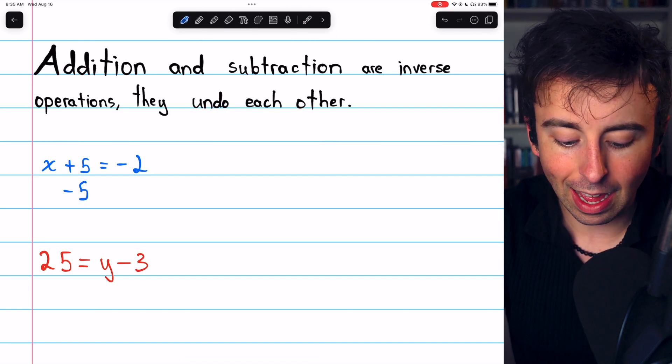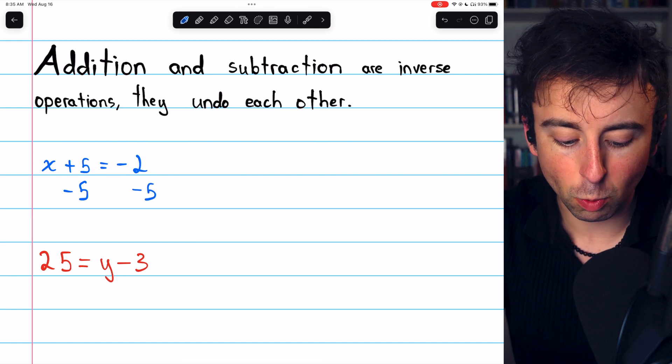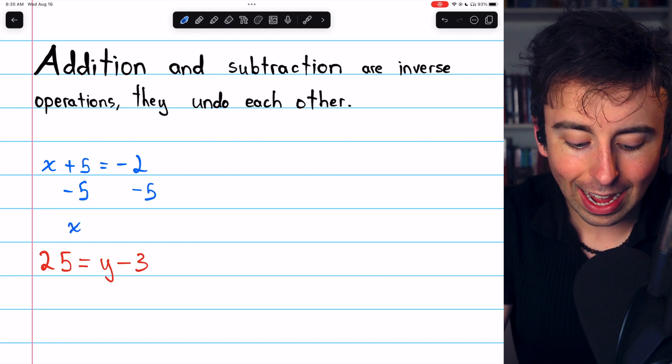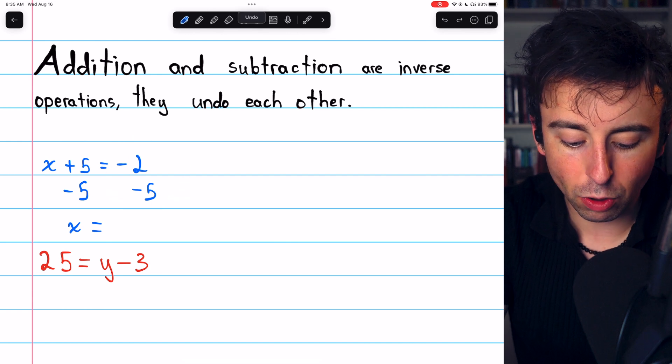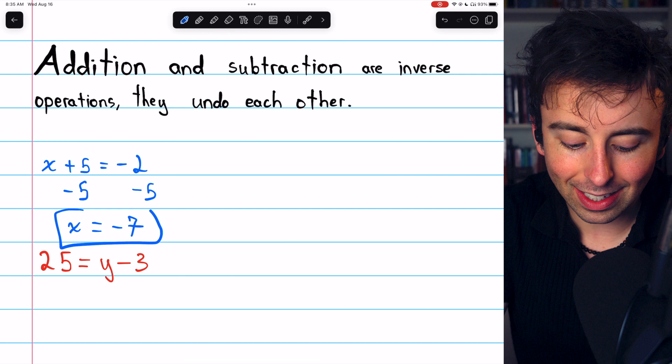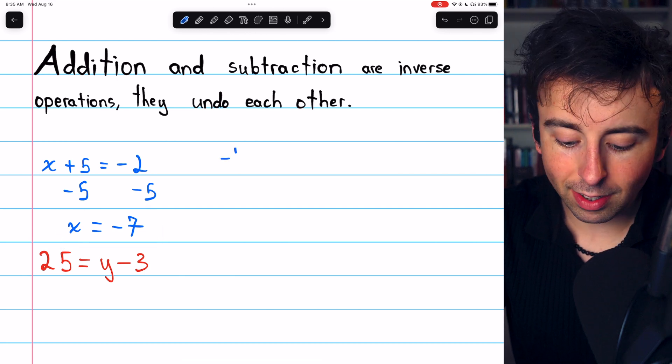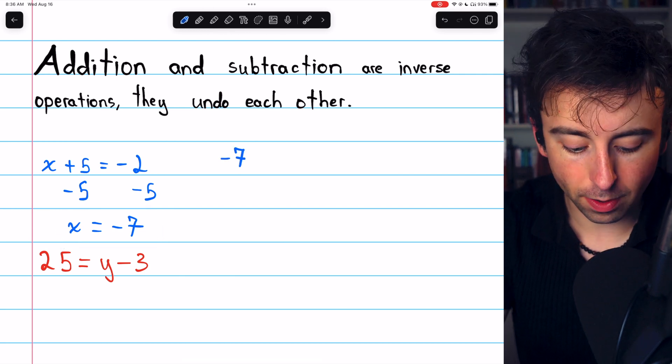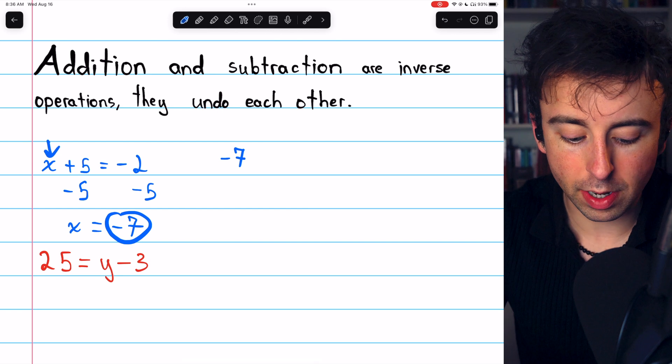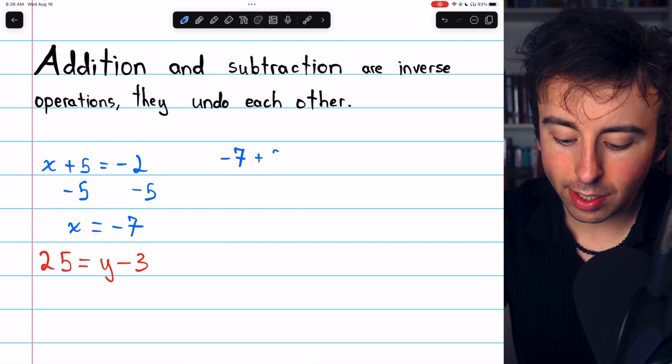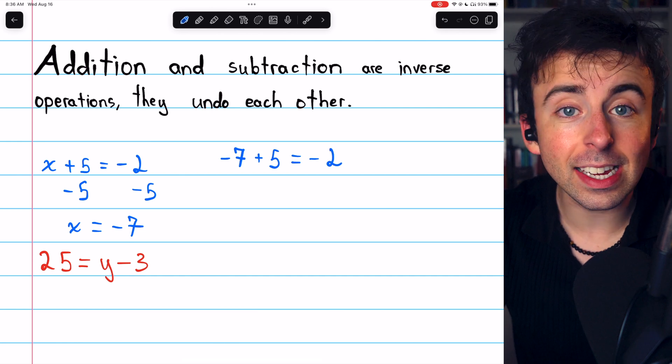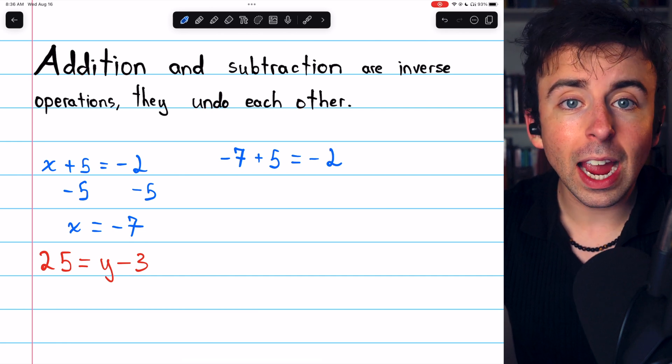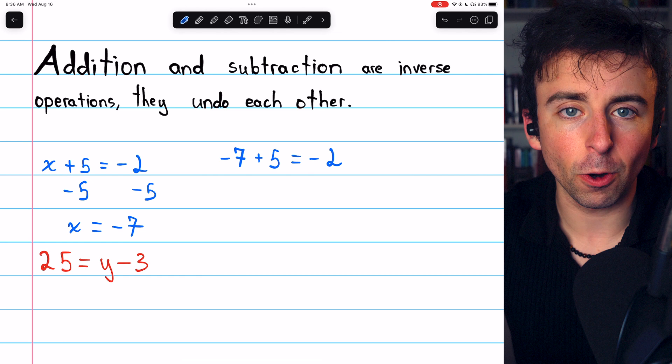Subtracting 5 on the left and subtracting 5 on the right leaves just x on the left side, and on the right side, negative 2 minus 5 is negative 7, and that is our solution. We can plug this solution into the equation, putting negative 7 where we previously had x, and we see that it's true. Negative 7 plus 5 is indeed equal to negative 2, and that verifies that we got the correct answer.